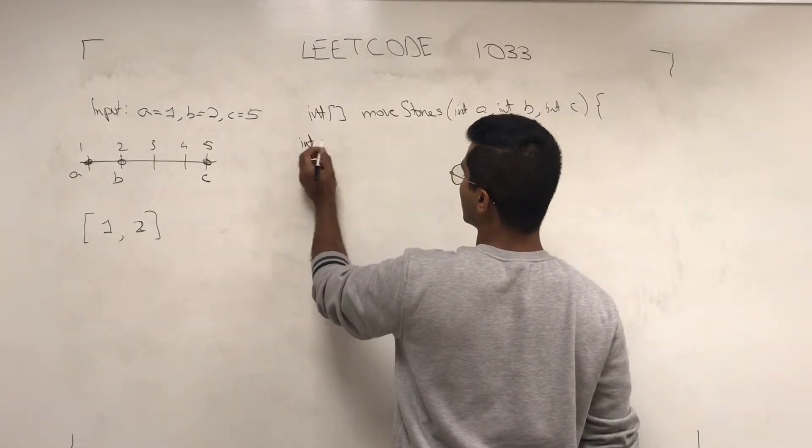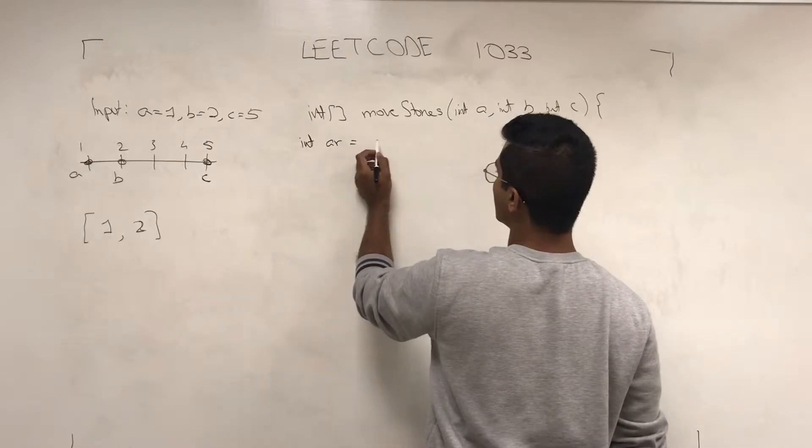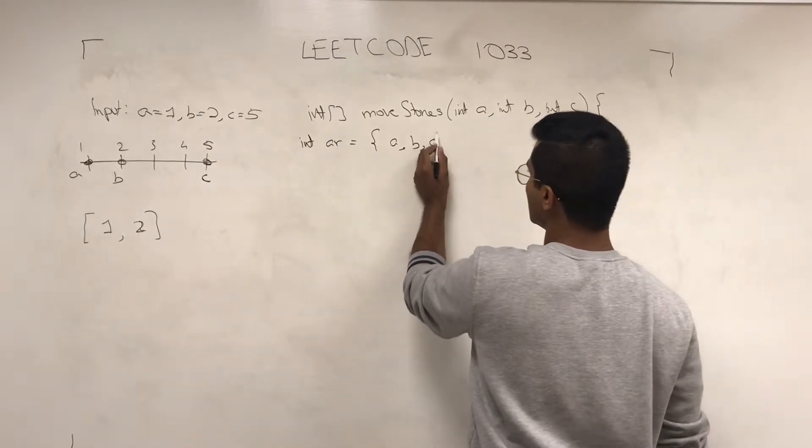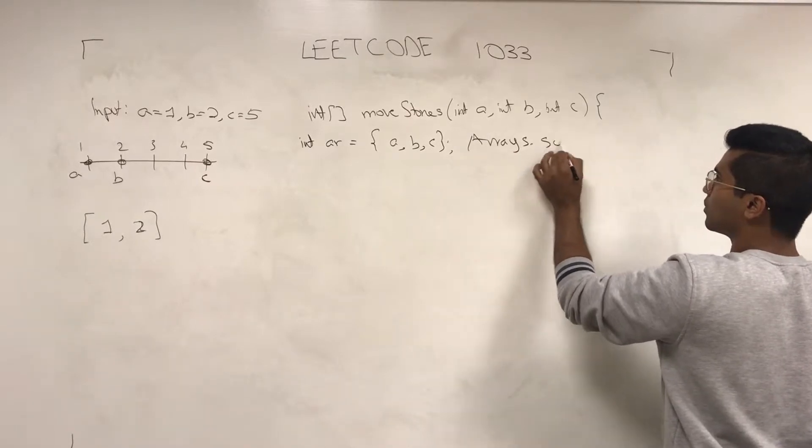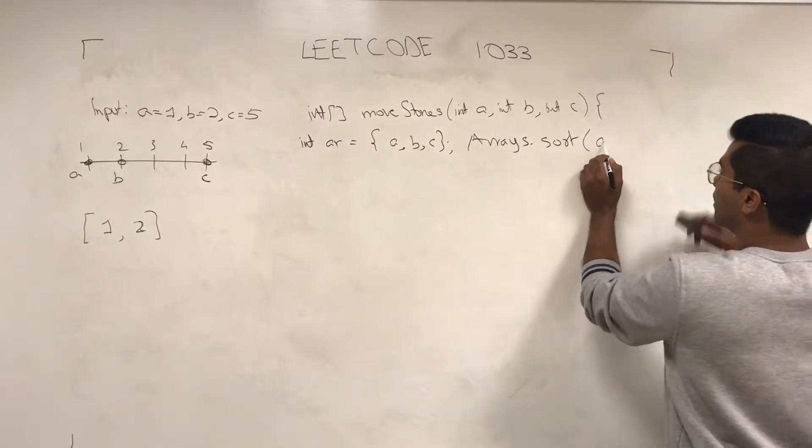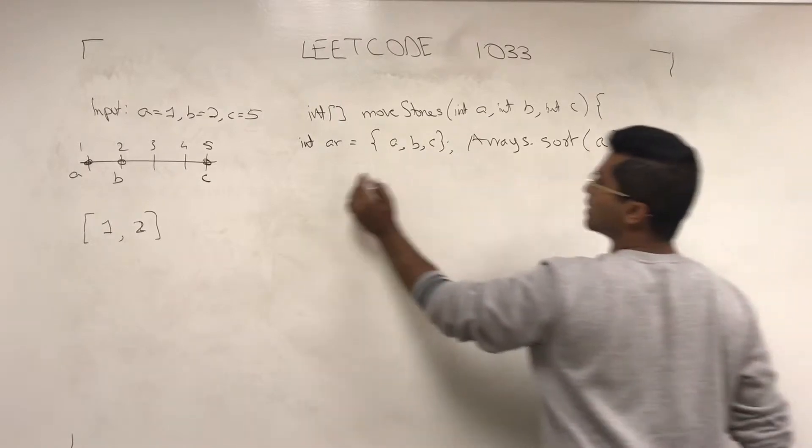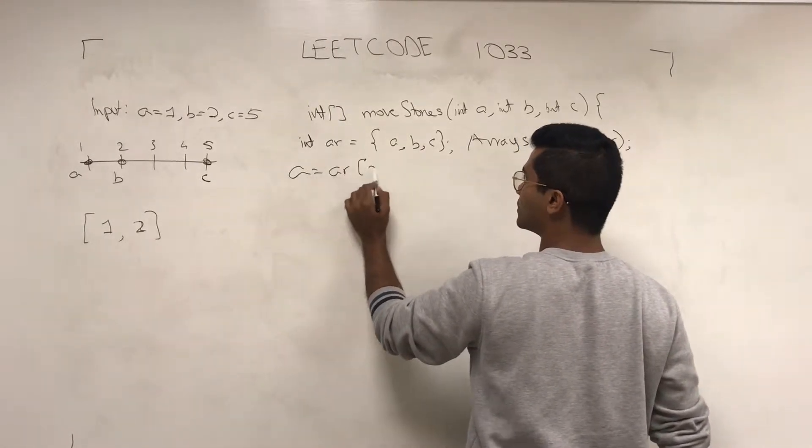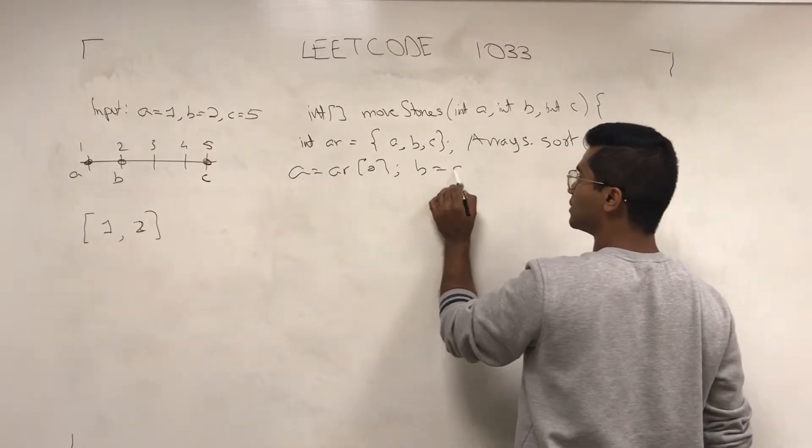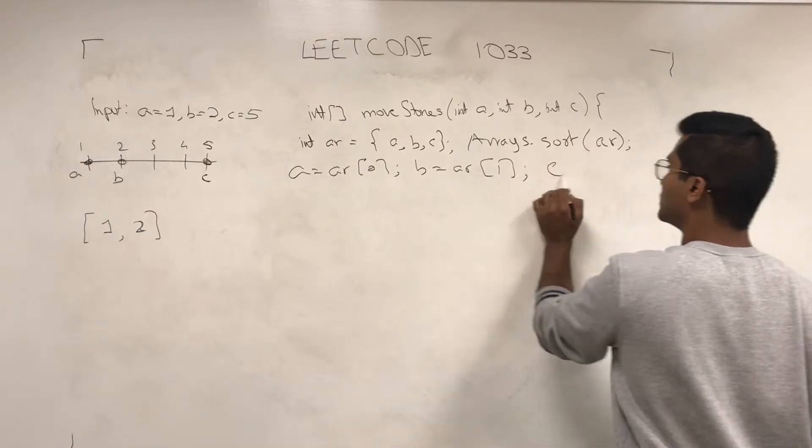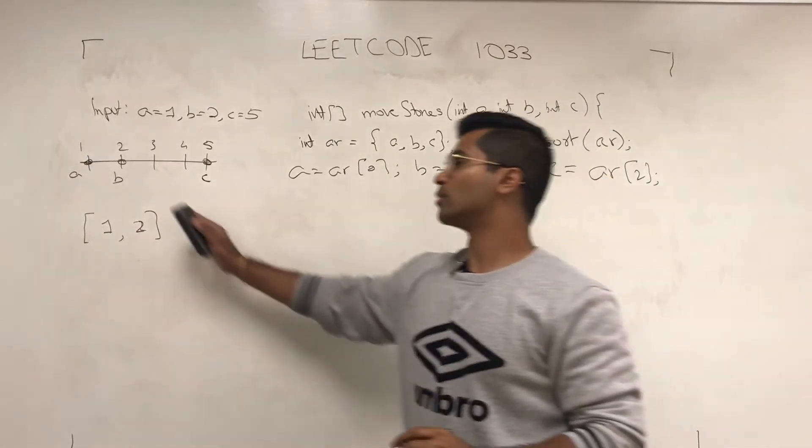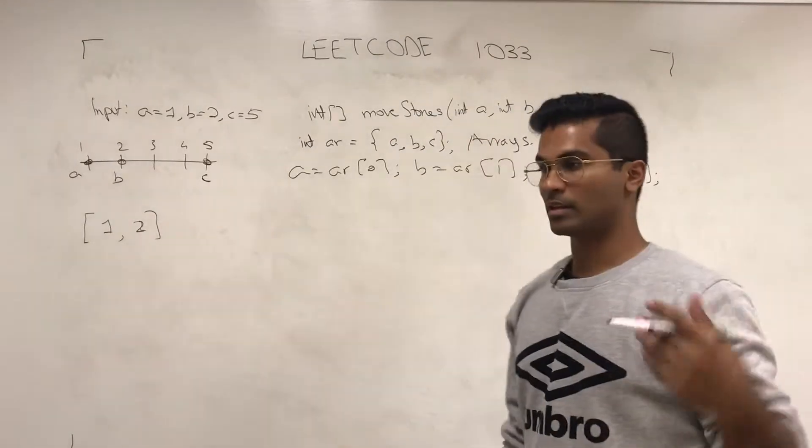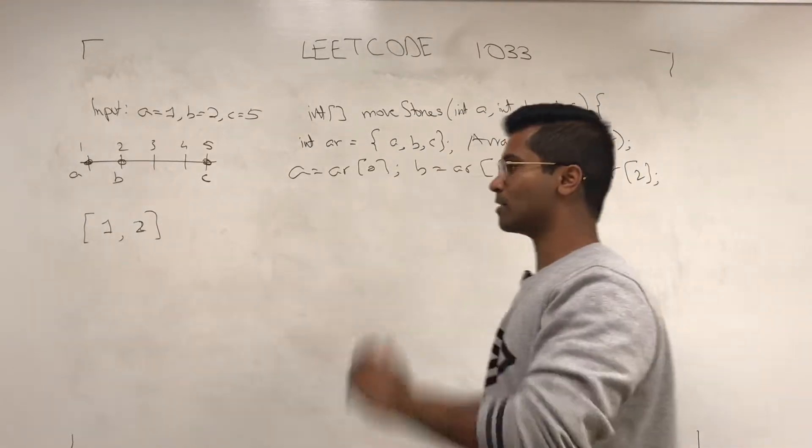So int array AR is going to be A, B, C. Arrays.sort(AR), and then A is going to be set to AR[0], B is going to be set to AR[1], C is going to be set to AR[2]. This way I know that A, B, and C, whatever I'm doing, is going to be in sorted order.